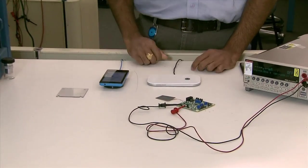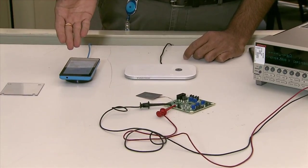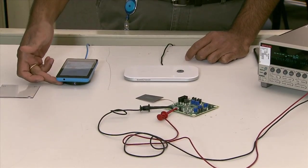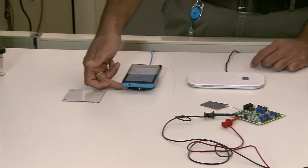First, on the WPC system. As you can see, the phone comes up and charges on a WPC transmitter. You can see from the LED that the phone is charging.